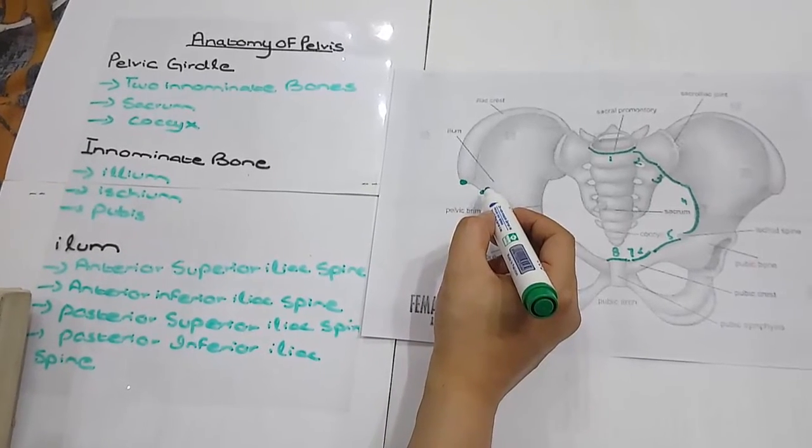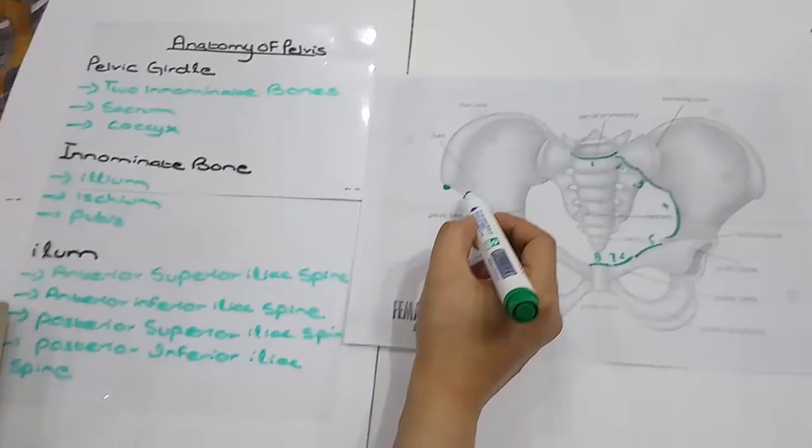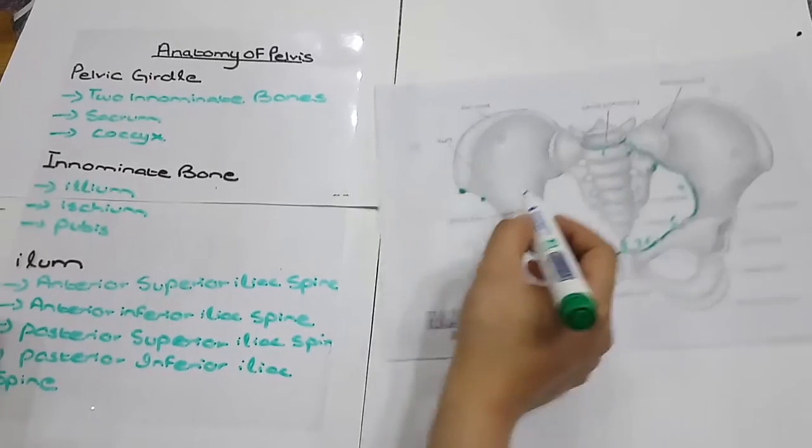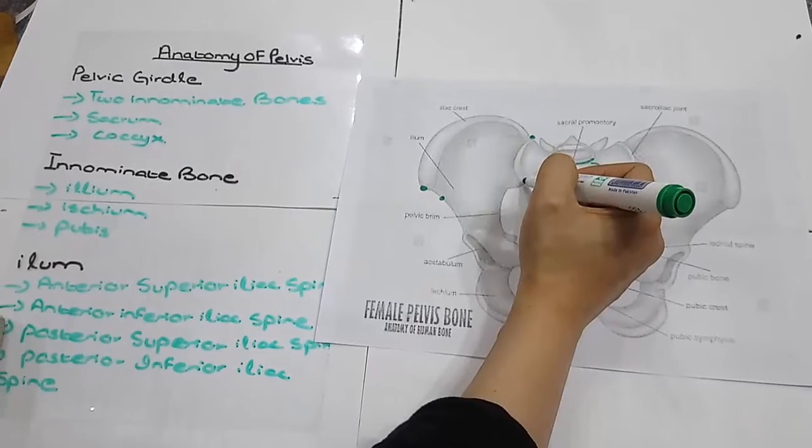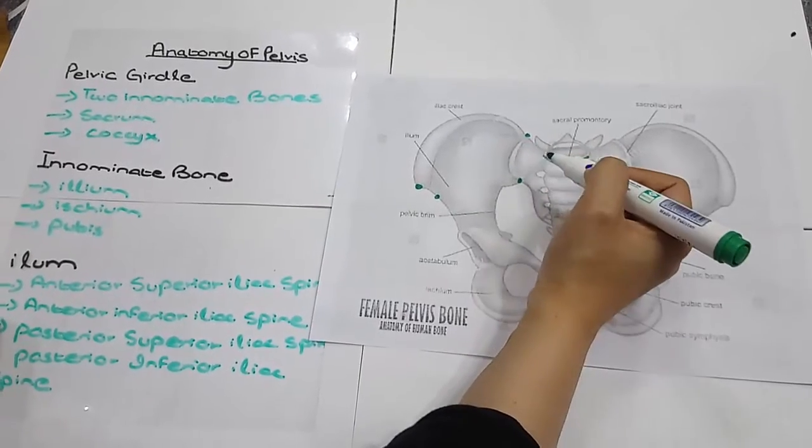There are two similar points at the other end of the ileum crest, namely the posterior superior ileum spine and the posterior inferior ileum spine.